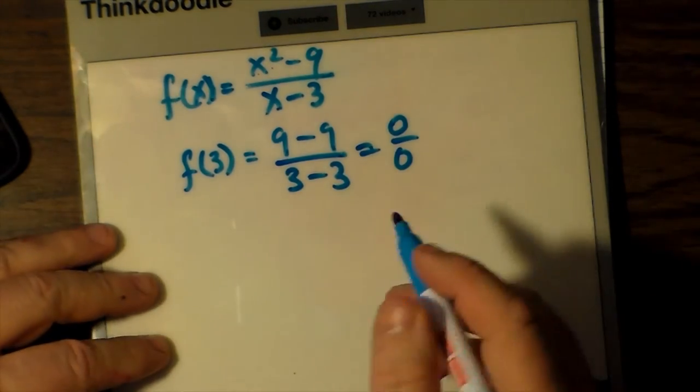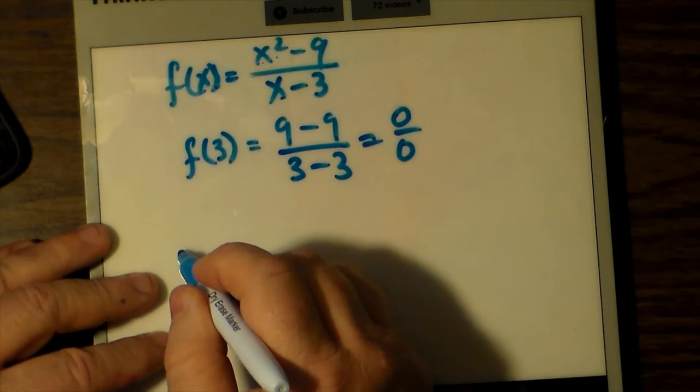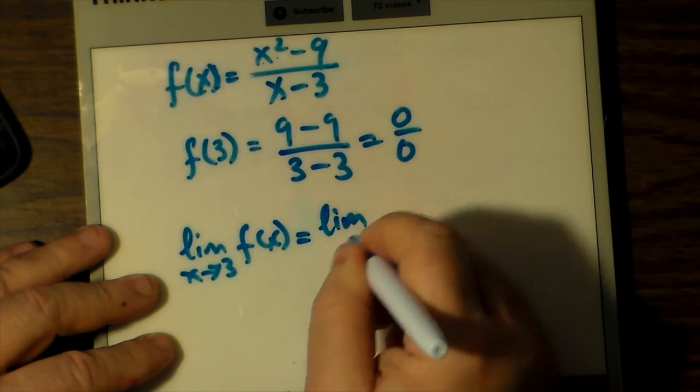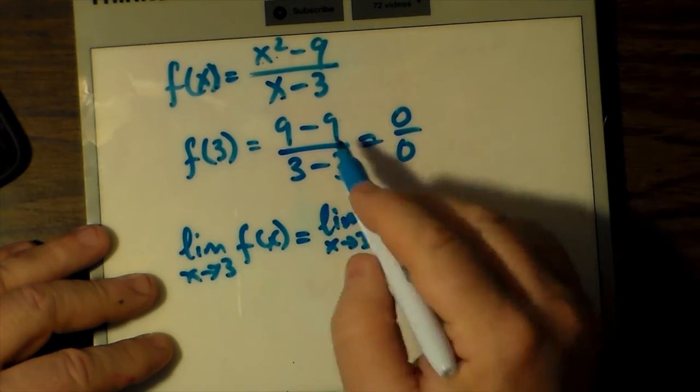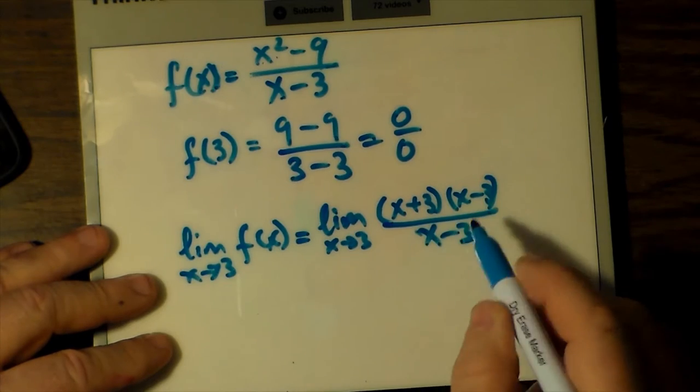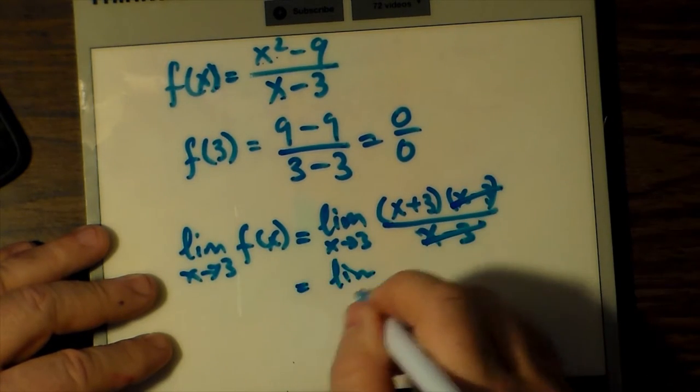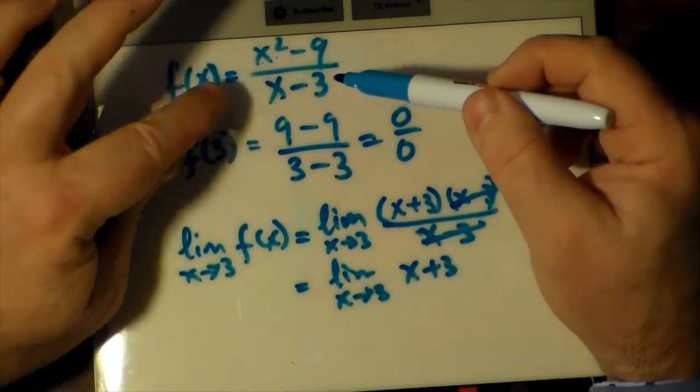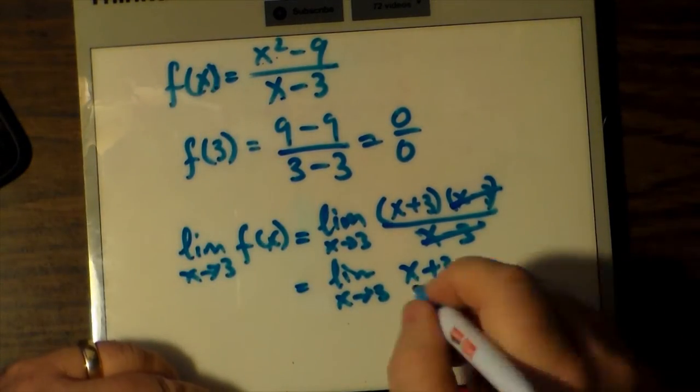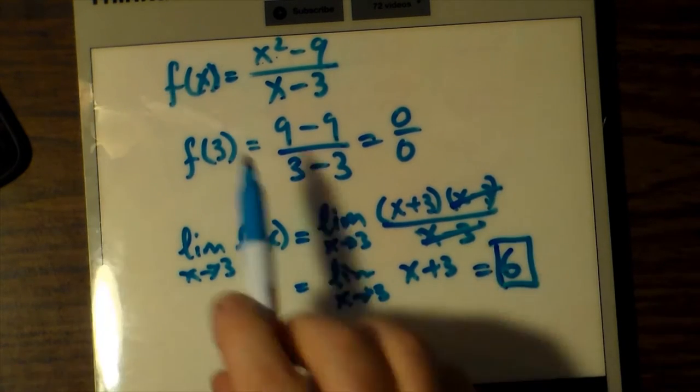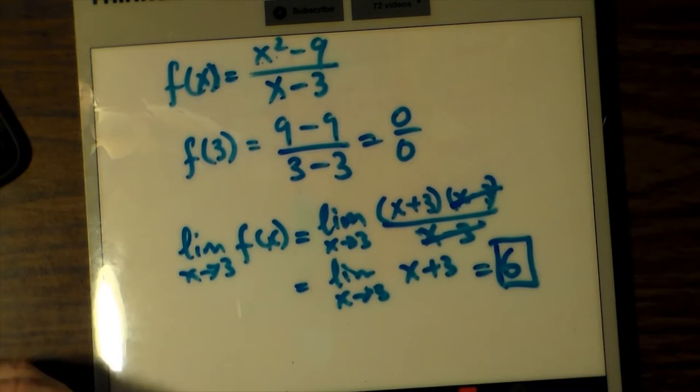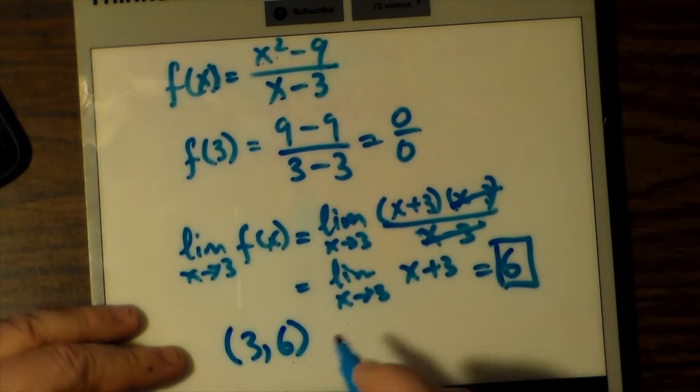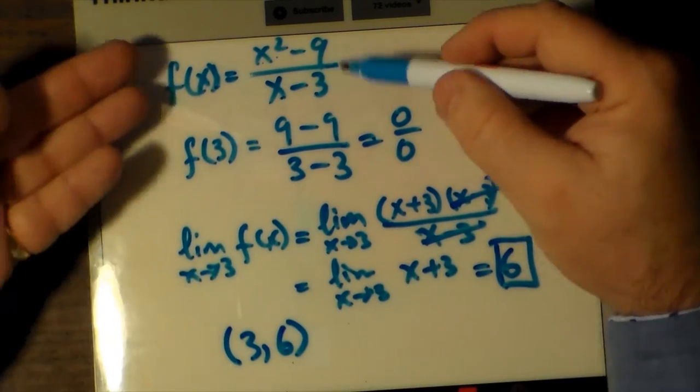To illustrate, let's look at the function f of x equals (x squared minus 9) divided by (x minus 3). You will notice that at x equals 3, we get f of x equals (9 minus 9) divided by (3 minus 3), which is zero over zero, which is undefined. Studying its limit, we can avoid left and right limits by doing some cancellation and evaluating the limit by direct substitution. The limit as x approaches 3 of f of x equals the limit as x approaches 3 of (x plus 3)(x minus 3) divided by (x minus 3). Notice that x minus 3 cancels, and we're left with the limit as x approaches 3 of x plus 3.